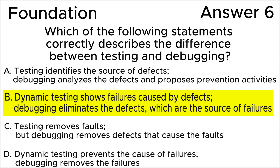Answer A is wrong because testing does not identify the source of defects — it is debugging that identifies the source of defects. Debugging can analyze defects and fix their cause, but does not propose prevention activities. Answer C is wrong because testing does not remove faults; it is debugging that removes the cause of failure.